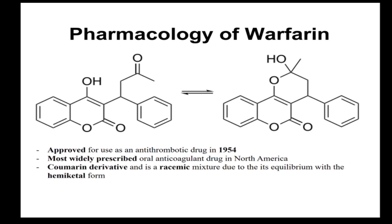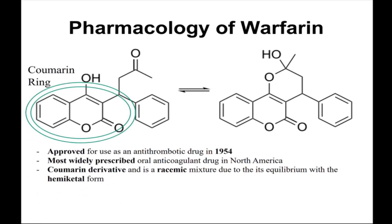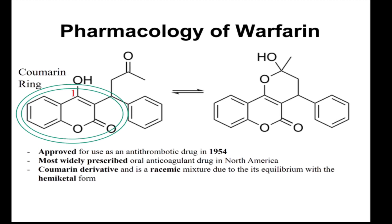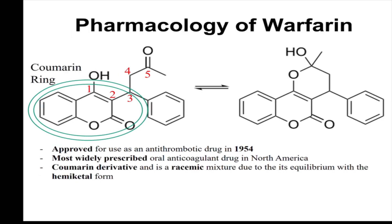Warfarin is a coumarin derivative, as you can see from its two rings here. This will come into play when we go over its mechanism of action. If you notice, there are five carbons between the alcohol and the ketone group — this is a textbook hemiketal ring formation. This ring is unstable, leading to an equilibrium state between the hemiketal and warfarin.